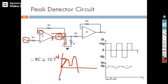When it reaches V1, the input decreases after that. Now the inverting terminal is at V1, and the input at the non-inverting terminal is decreasing. That means negative is greater than positive, which will produce zero output at the operational amplifier. Zero output will reverse bias the diode, and the capacitor will start to discharge through this resistor. We have designed the resistor value so that the capacitor will slowly discharge — it will almost remain the same.